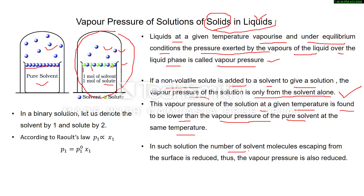This is because in such a solution, the number of solvent molecules escaping from the surface is reduced, so the vapor pressure is also reduced. In such a binary solution with a non-volatile solute, the solvent is component 1 and solute is component 2, but vapor pressure is only due to the solvent. Applying Raoult's law: P1 = P01·X1, where P01 is the vapor pressure of the pure volatile solvent.